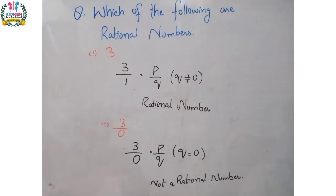So let's start our question: which of the following are Rational Numbers? Simply you can identify the digits as Rational or Non-Rational. So 3 — we can write 3 as 3 upon 1, in the format P upon Q where Q is not equal to 0, so 3 is a Rational Number. Number 2 is 3 upon 0 — it is also written in P upon Q form, but Q is equal to 0, so 3 upon 0 is not a Rational Number.